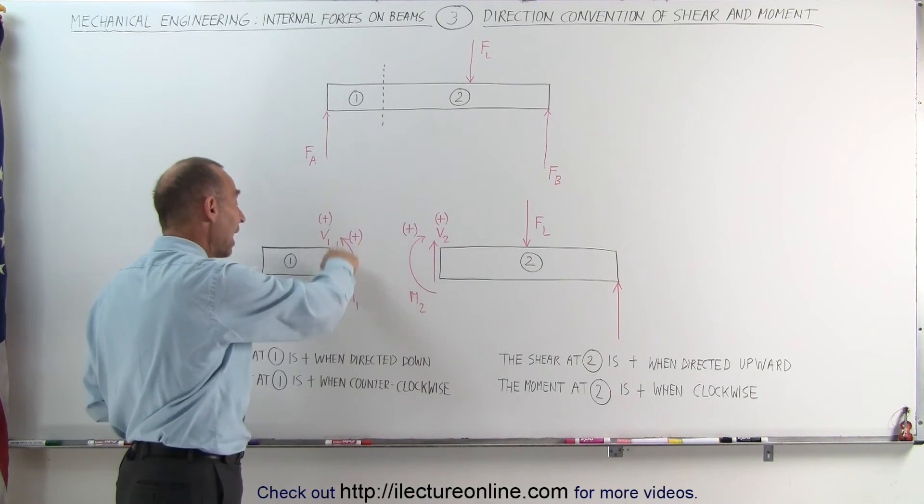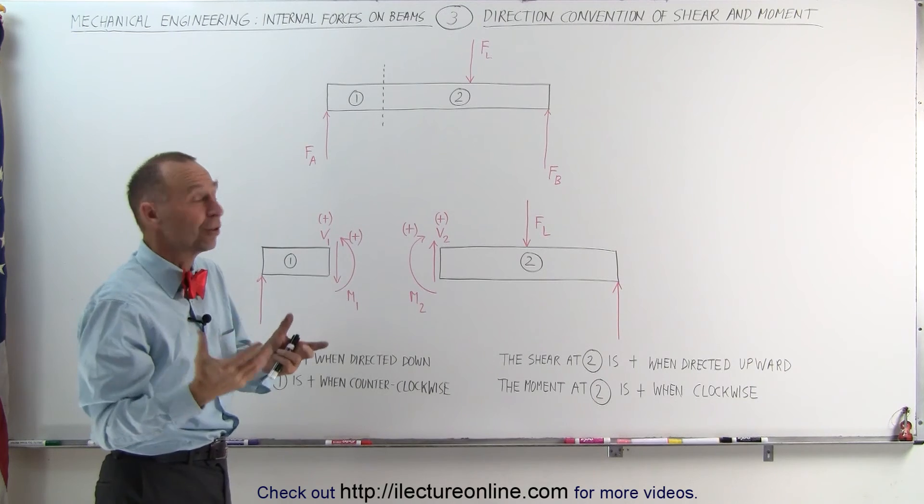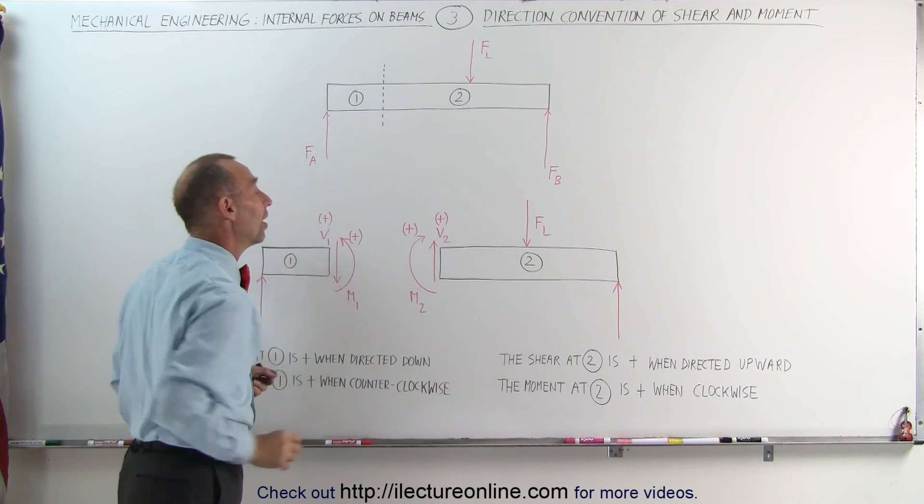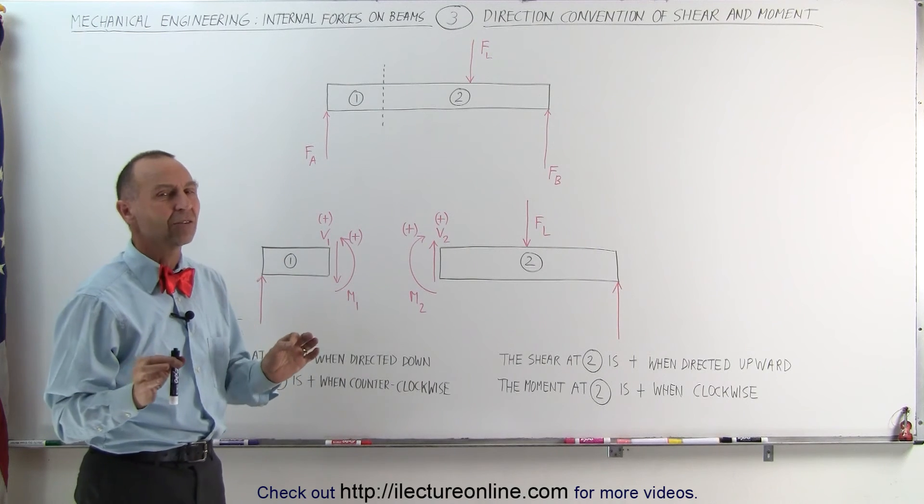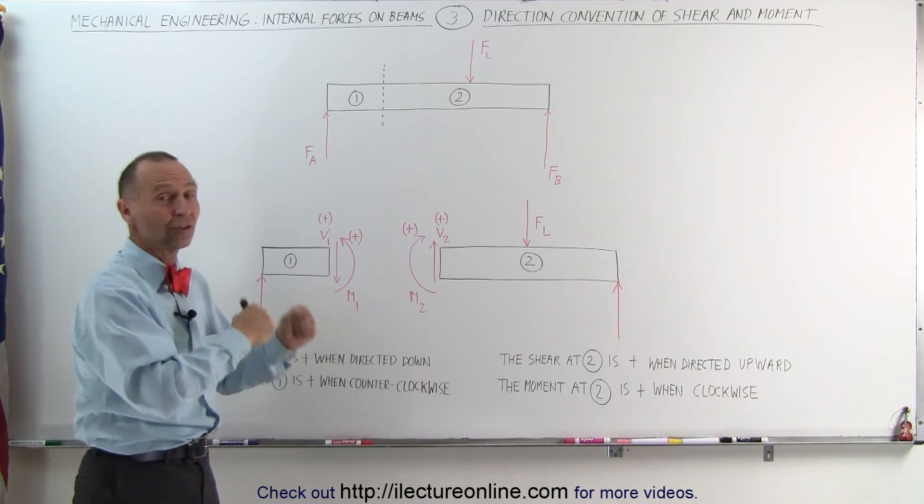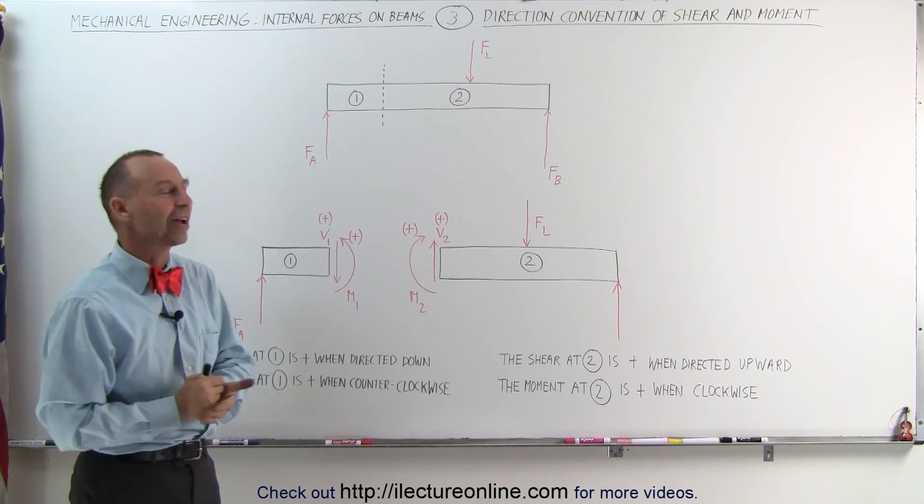Also notice, down on the shear here is considered positive, which is also confusing. And up is positive on the right section right there. So keep that in mind. That's the way it is. If you don't have that straight and you start working out the problems, you're going to get very confused on the signs.